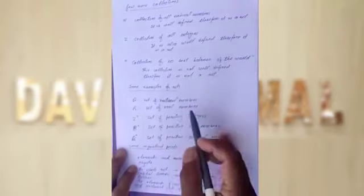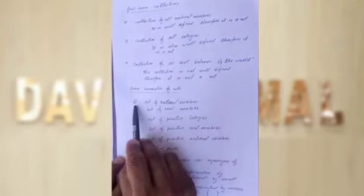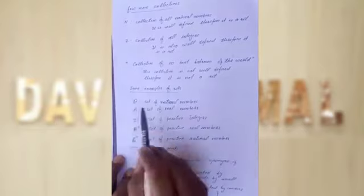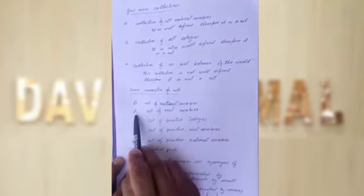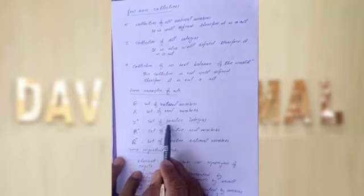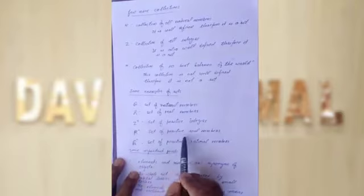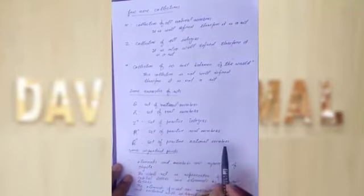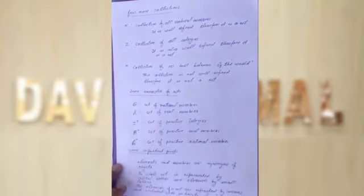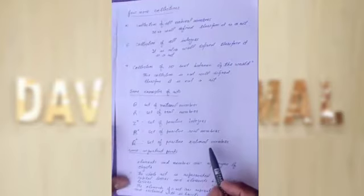Some more examples of sets: the set of rational numbers is represented by capital Q; the set of real numbers by capital R; the set of positive integers by Z+; the set of positive real numbers by R+; and the set of positive rational numbers by Q+.